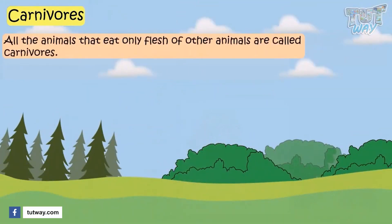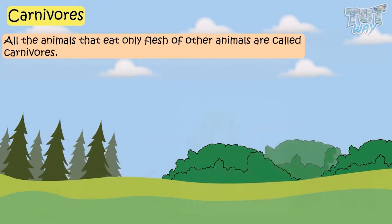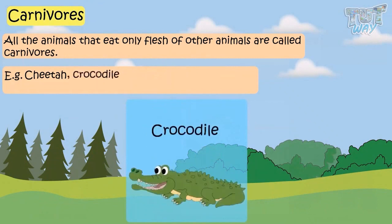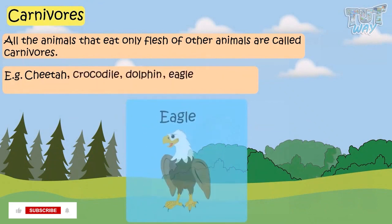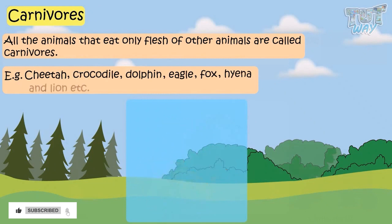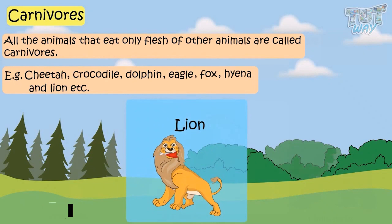All animals that eat only flesh of other animals are called carnivores. Cheetah, crocodile, dolphin, eagle, fox, hawk, hyena, and lion eat only the flesh of other animals. So these are carnivores.